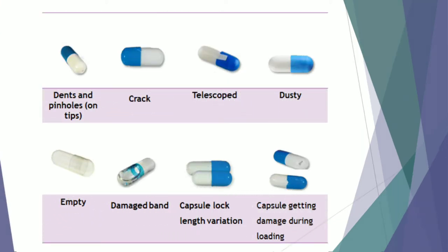Here you can see the various problems that are associated with capsule filling. The first one is dents or pinhole on tip. The second one is crack. The third one is telescoped. Fourth one is dusty. Fifth one is empty. Sixth one is damaged band. Next one is capsule lock length variation. And last one is capsule getting damaged during loading. We will be seeing these defects one by one along with their causes as well as remedies.